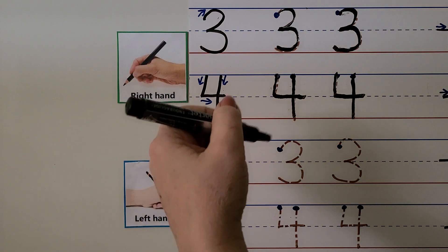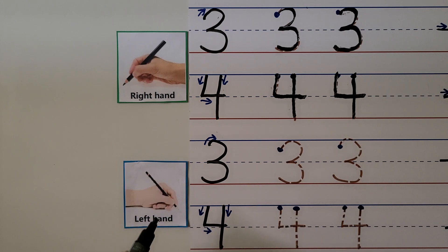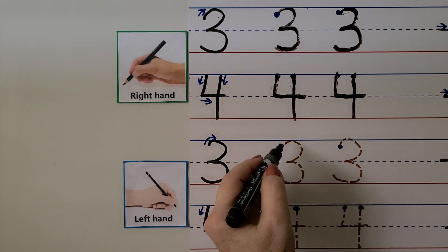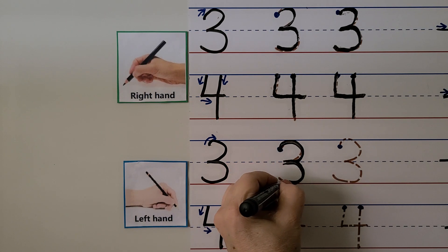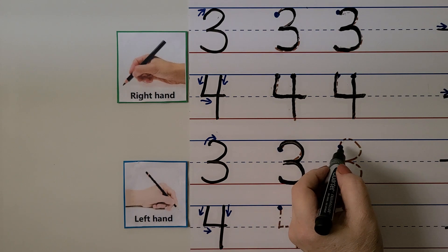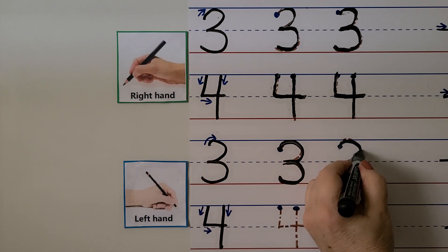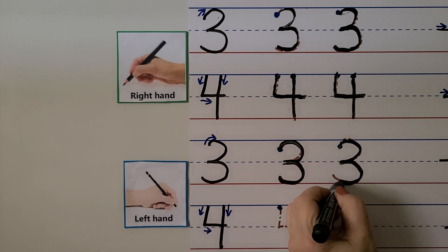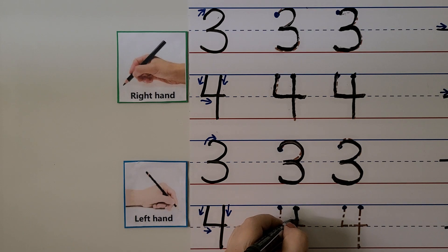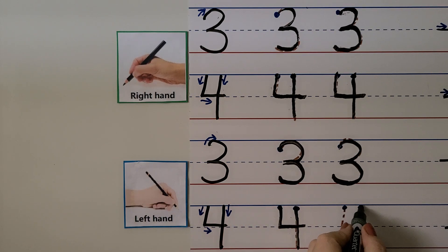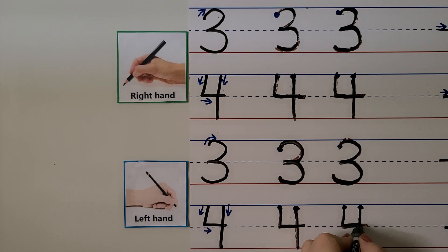For those who write with their left hand — we can make the number 3 by starting at the dot, coming around to the dotted line, and around again to the bottom line, curling up a little. For the number 4 with the left hand, we come straight down, then start here, come down to the dotted line, and go across.